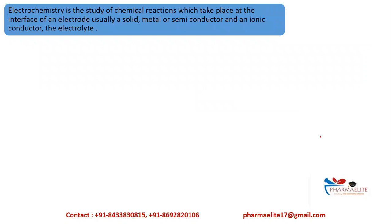What is electrochemistry? Electrochemistry is the study of chemical reactions which take place at the interface of an electrode — which is usually a solid metal or a semiconductor — and an ionic conductor which is the electrolyte. That is, you study the chemical reaction between an electrode and an electrolyte.